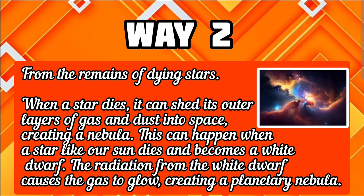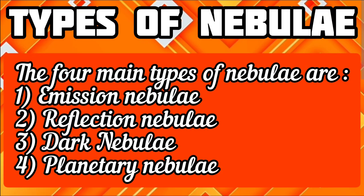This can happen when a star like our sun dies and becomes a white dwarf. The radiation from the white dwarf causes the gas to glow, creating a planetary nebula. Types of nebulae: the four main types of nebulae are emission nebulae, reflection nebulae, dark nebulae, and planetary nebulae.